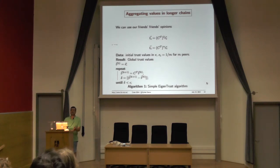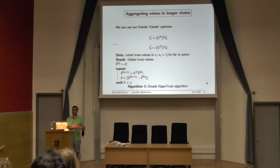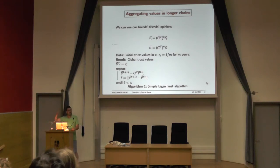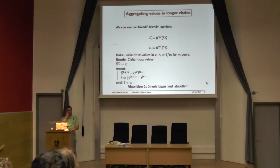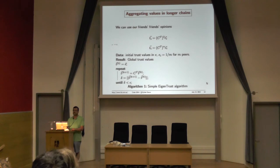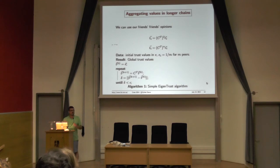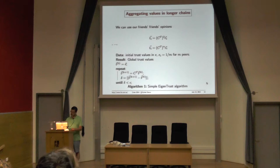The only thing you need to do is pass the local information to a central server, where you compute the matrix C, then compute the thing, and generate the final vector T that has the trust on every member of the society. That vector is the one that can be consulted by people. Every time there is a change in your experiences, you communicate the new value and recompute.